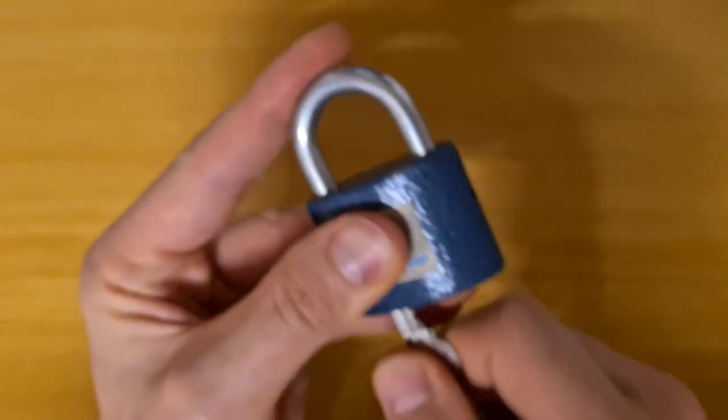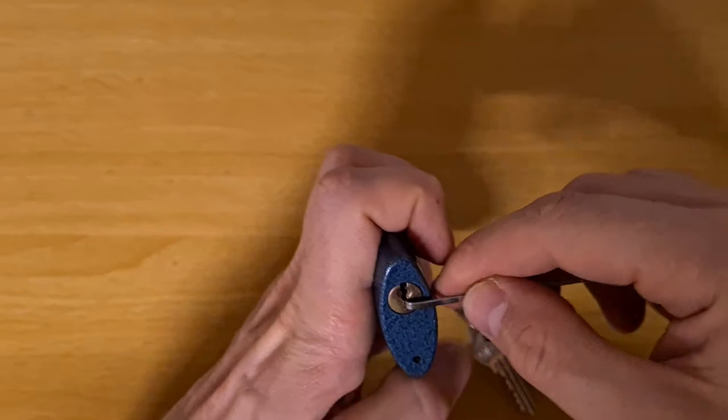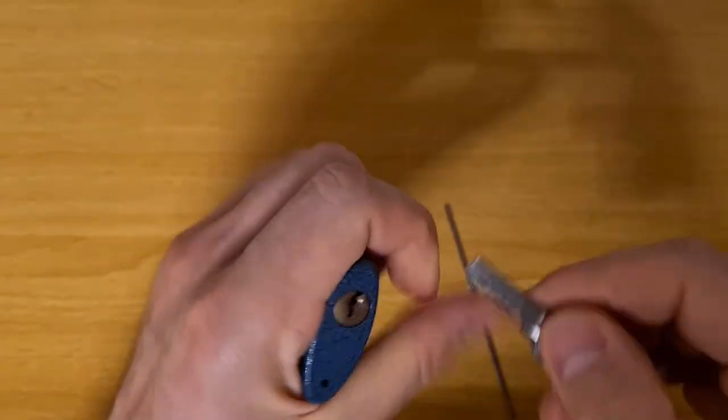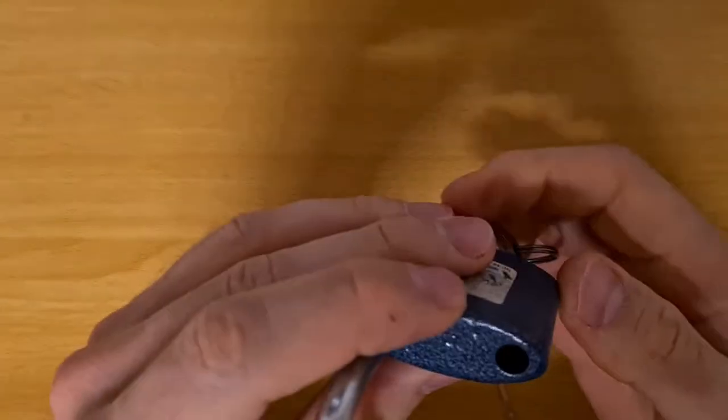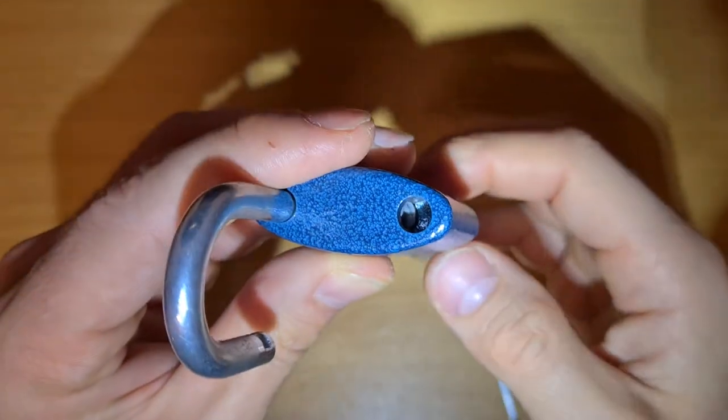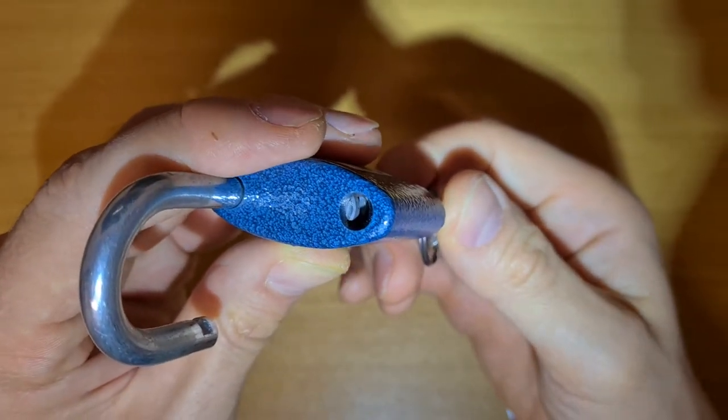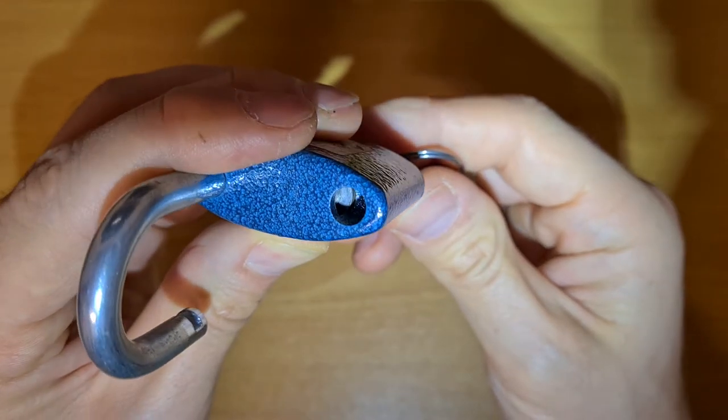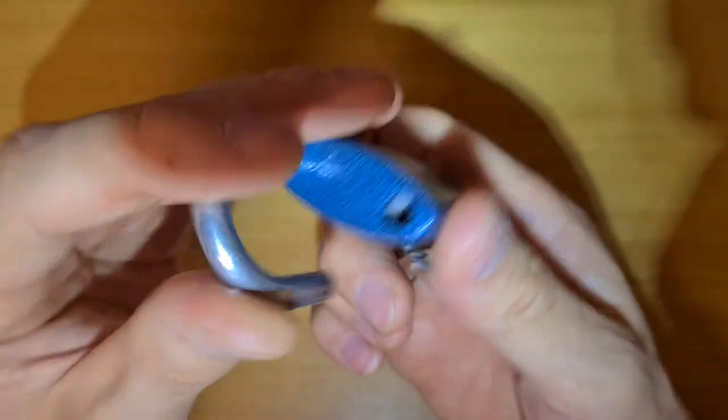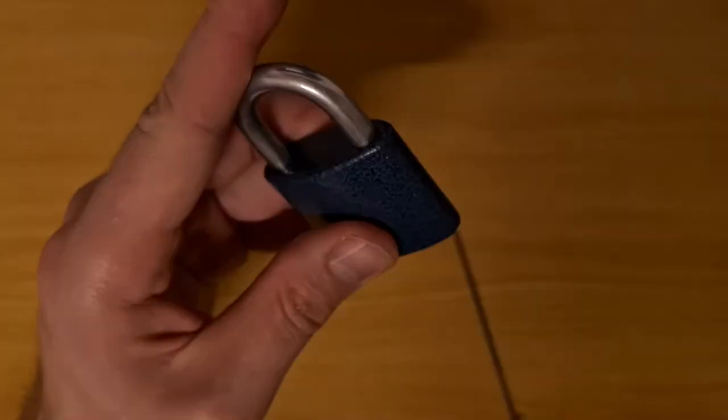But before I go that way, let me show that it can be picked relatively easily. Yeah, it's five pin, the bitting is meh. I just want to show how it works. There is a cam inside of that hole, I hope you can see it. Let me add some light. When you turn, now it's in the lock position, and when you turn the key it releases the shackle.